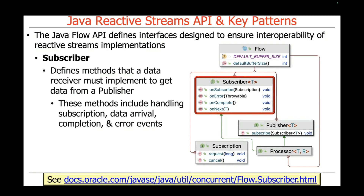The first interface is called Subscriber, which defines four methods that a data receiver or data consumer must implement to get data from a publisher. These methods include ways of being called back to handle a subscription, as well as hook methods that are called on data arrival — the onNext method — data completion — the onComplete method — and error events — the onError hook method. That's what a subscriber is: the root of things that receive events from one or more publishers.